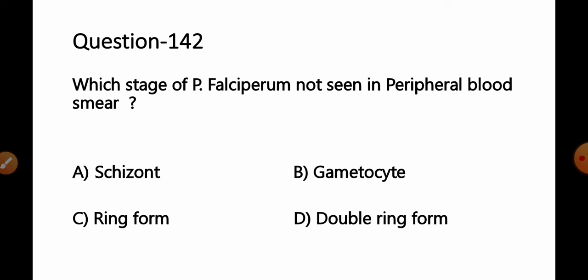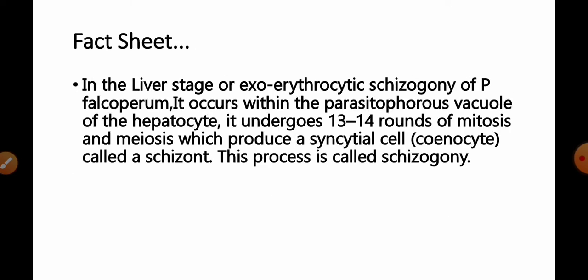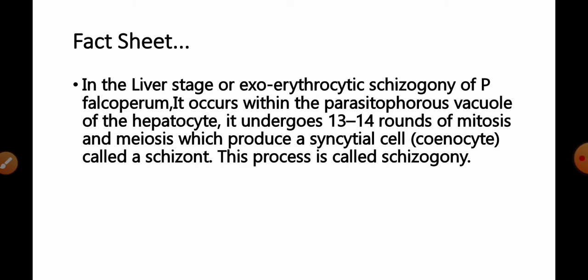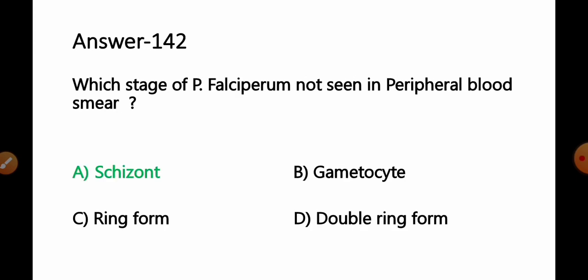Question 142: Which stage of P. falciparum cannot be seen in the peripheral blood smear? Option A schizonts, B gametocytes, C ring form, D double ring form. In the liver stage (exoerythrocytic schizogony), P. falciparum undergoes 13–14 rounds of mitosis within parasitophorous vacuoles of hepatocytes, producing cells called schizonts. Since schizonts form in liver cells, they cannot be seen in red blood cells or peripheral blood smear. Option A schizonts is the correct answer.